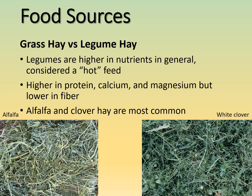Legume hays include alfalfa and clover — mostly white or red clover. Some clover types contain pyrrolizidine alkaloids that cause liver toxicity, but red and white clover are the types typically made into hay. Legume hay has higher protein, calcium, and magnesium, and lower fiber than grass hay. It's considered a hot feed with higher energy and nutrient levels, making it a good forage option for many herbivores.